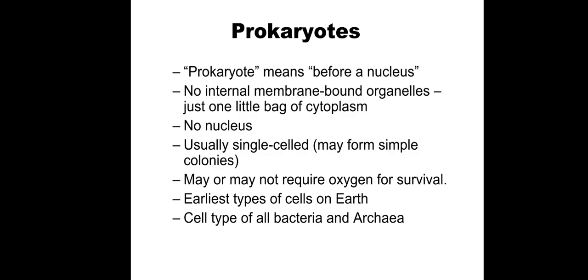Prokaryote means before a nucleus — pro means before and karyon means nucleus. In evolutionary time, they came before eukaryotes existed on Earth; eukaryotes evolved from them later. Prokaryotes don't have any membrane-bound organelle, no nucleus — only cytoplasm and naked DNA or nucleoid. They are single-celled but can form simple colonies, and they are the earliest type of cells on Earth.